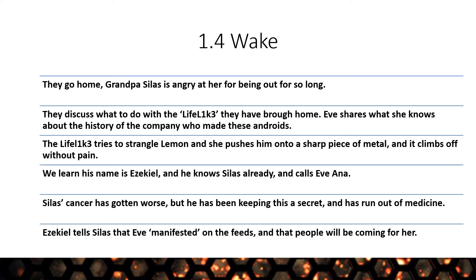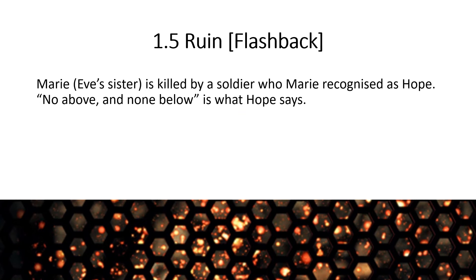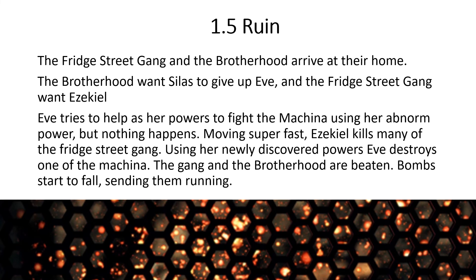Ezekiel tells Silas that Eve has manifested on the feeds — their TV — and that people will be coming for her. 'Ruin' starts with a flashback: Marie, thought to be Eve's sister, is killed by a soldier who Marie recognises as Hope, who says 'none above and none below' before killing her. Then in 'Ruin,' we're at Grandpa Silas and Eve's house, where Lemon has been staying for ten months. The Fridge Street Gang and the Brotherhood arrive — the Brotherhood wants Silas to give up Eve because she has powers, and the Fridge Street Gang wants Ezekiel, who they feel was stolen from under their noses.